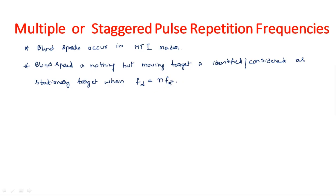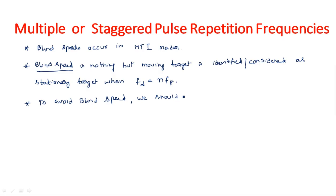Blind speed occurs only in MTI radar. To avoid blind speed while still using MTI radar, we should use multiple or staggered pulse repetition frequencies. So instead of using a single PRF, we go for multiple frequencies, which can definitely help avoid blind speed.